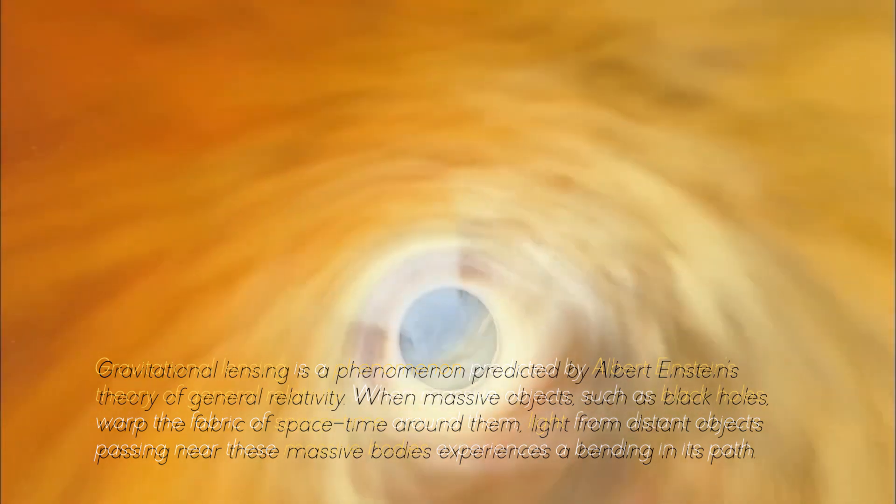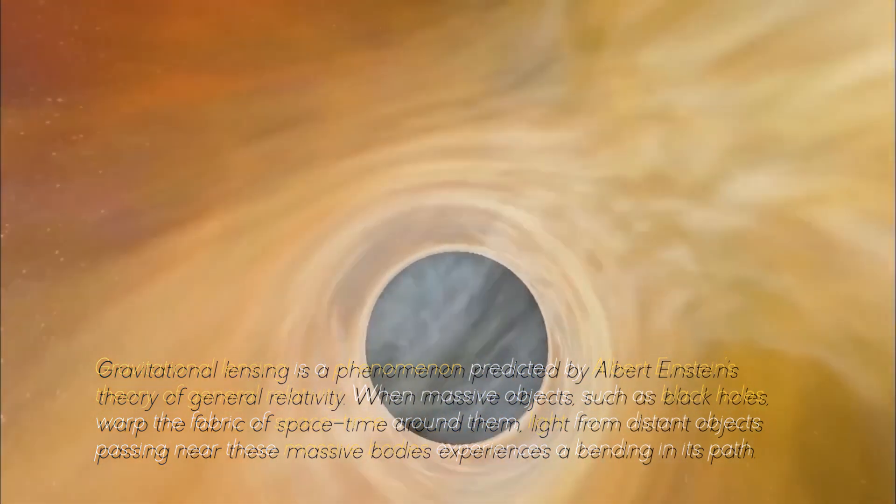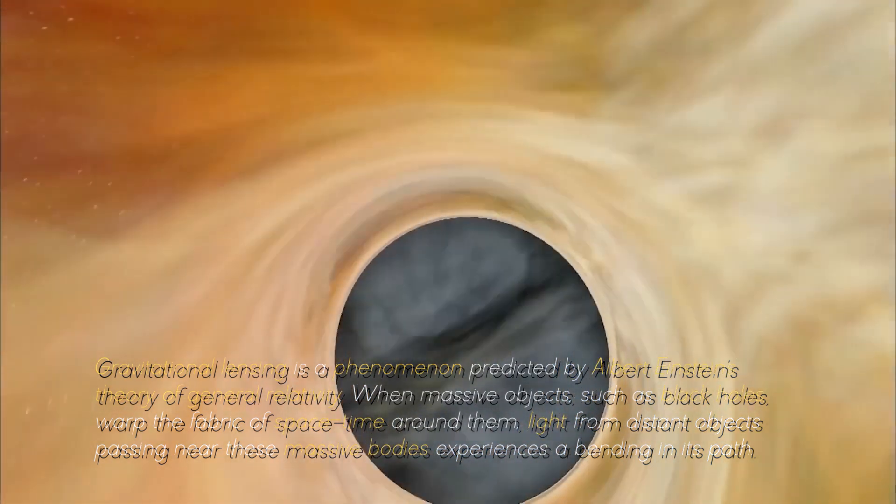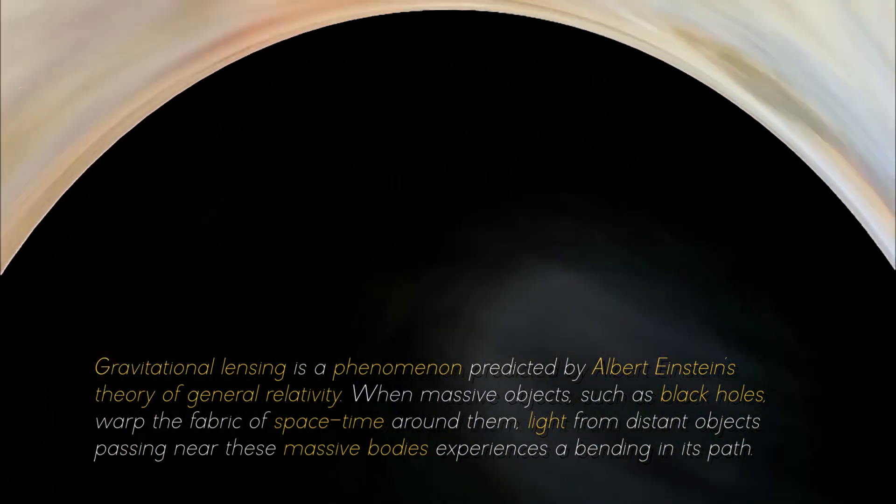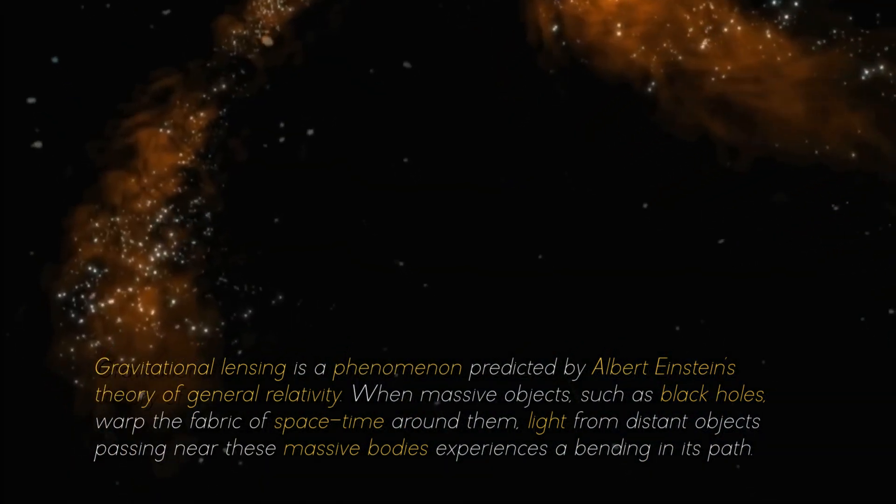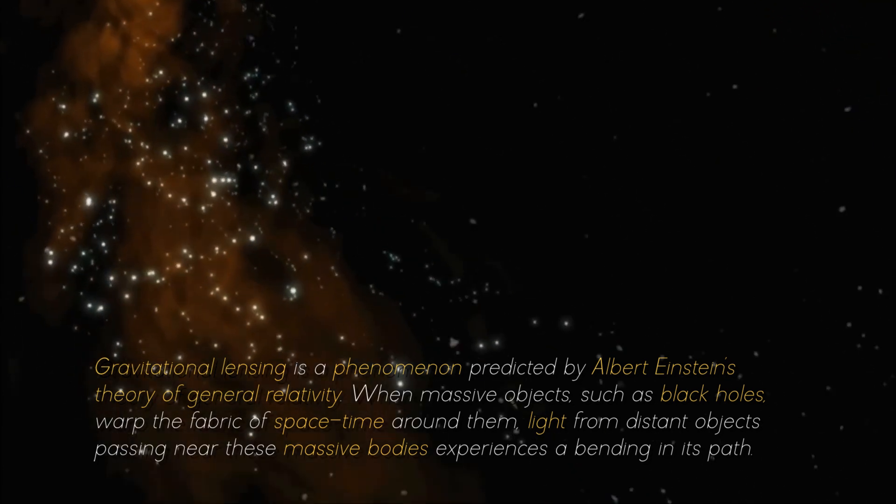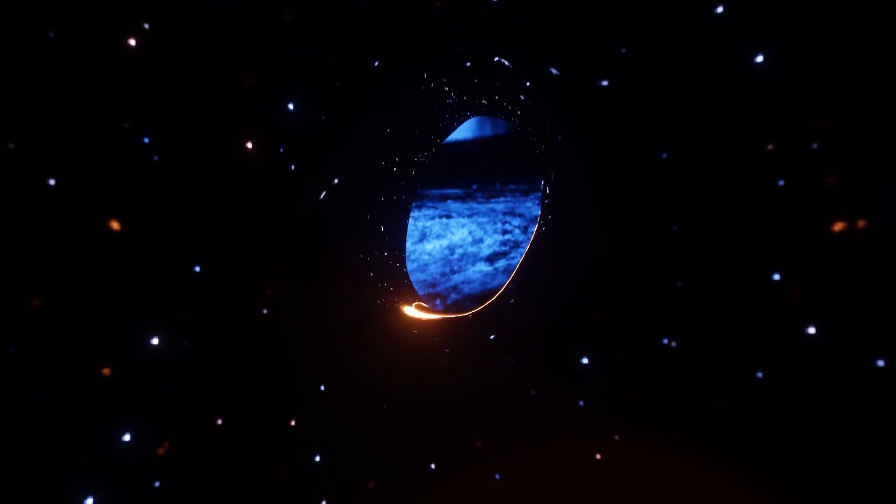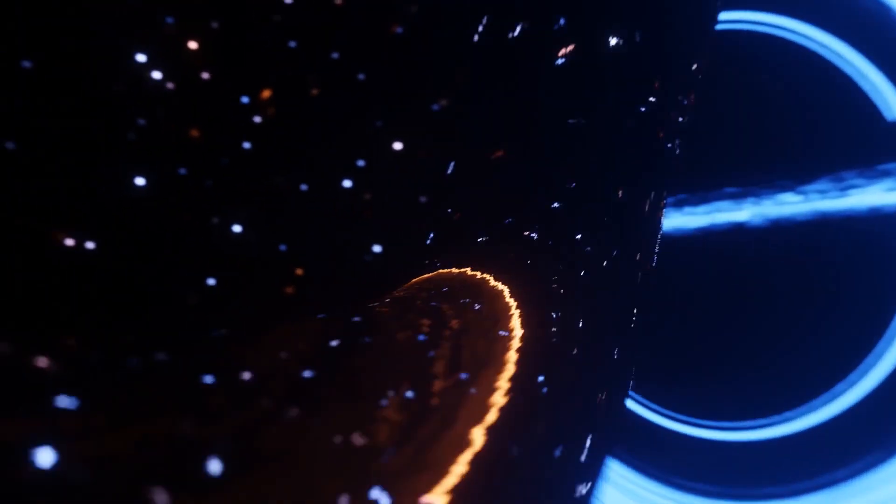Gravitational lensing is a phenomenon predicted by Albert Einstein's theory of general relativity. When massive objects, such as black holes, warp the fabric of space-time around them, light from distant objects passing near these massive bodies experiences a bending in its path. This results in a visual distortion or magnification of the object's image.